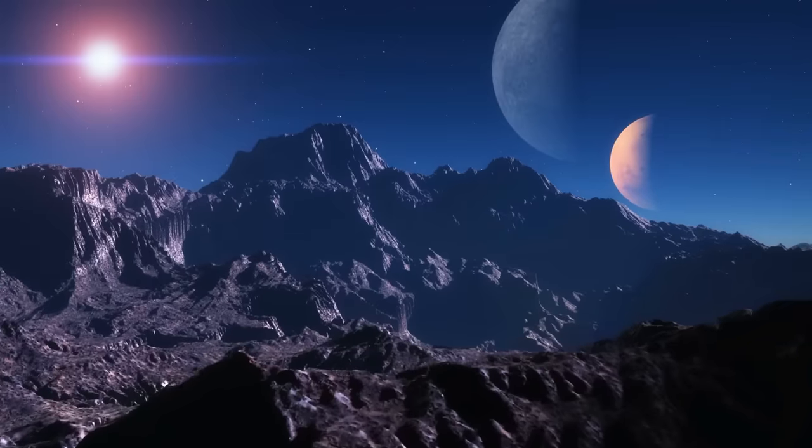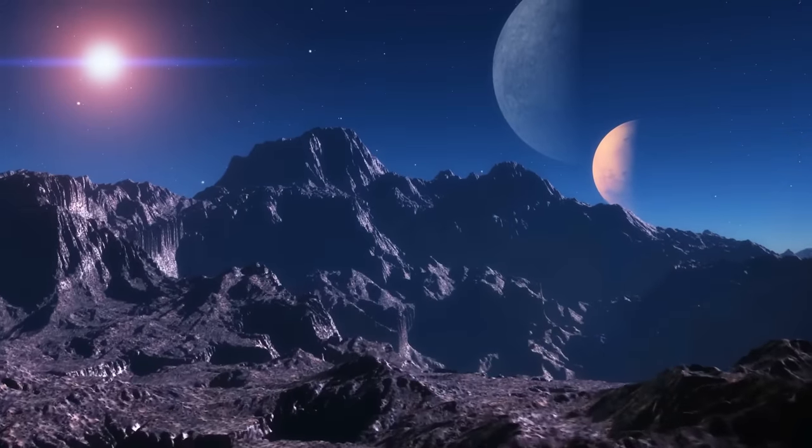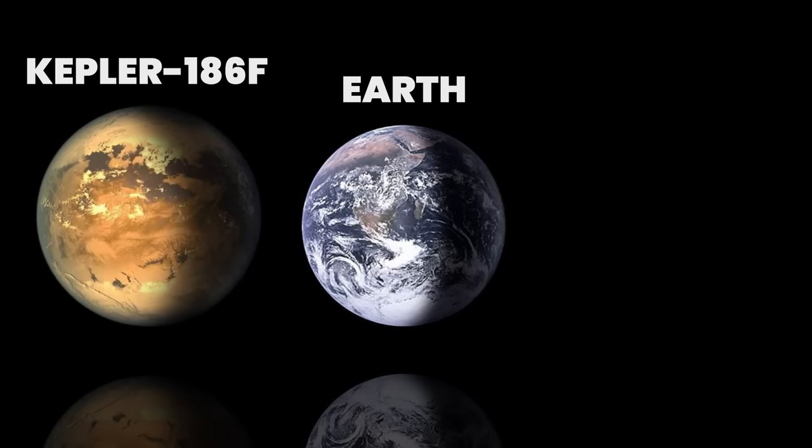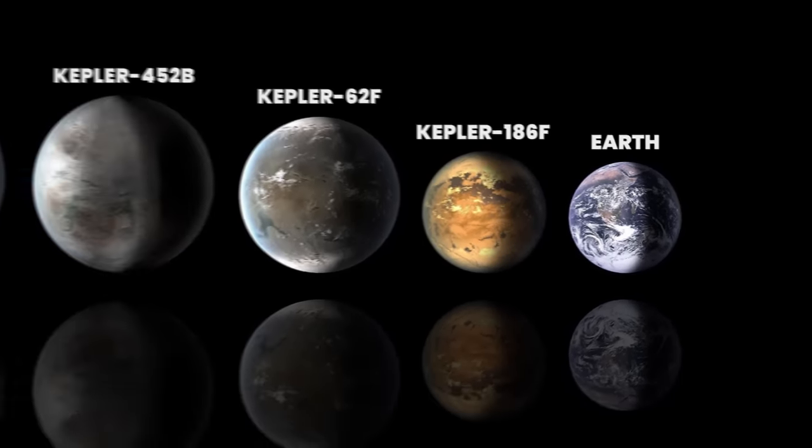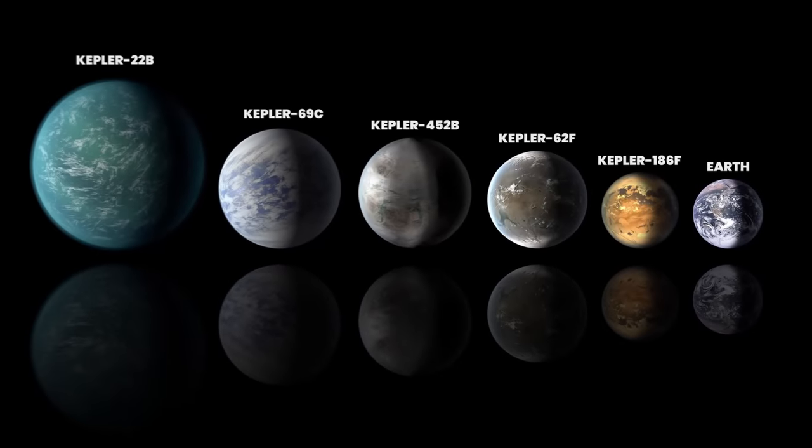These exoplanets are unlike anything we've ever seen in our solar system before. Most of them are significantly bigger than Earth and orbiting so close to their stars that they complete one revolution every several days.